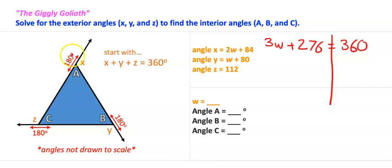We're going to solve for the exterior angles X, Y, and Z to find the interior angles A, B, and C. So we've got to find angle X, angle Y, and angle Z, and then they're going to make a straight line with the interior angles A, B, and C.